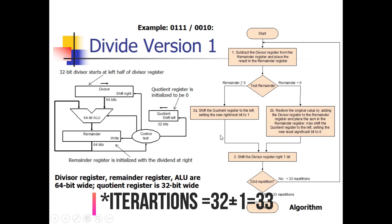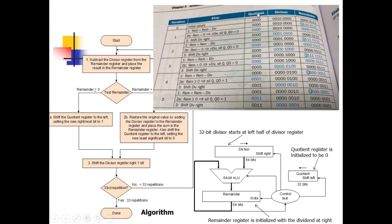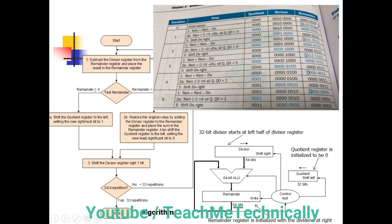In this example we use a 4-bit quotient register, an 8-bit divisor register, and an 8-bit remainder register. The left half of the divisor register contains the divisor bits 0010, meaning we are dividing by 2. The right half of the remainder register contains the dividend bits 0111, meaning the dividend is 7. We are now going to start the algorithm.